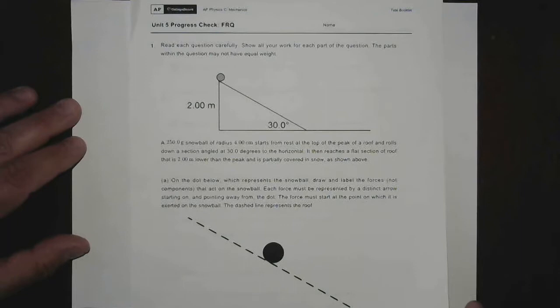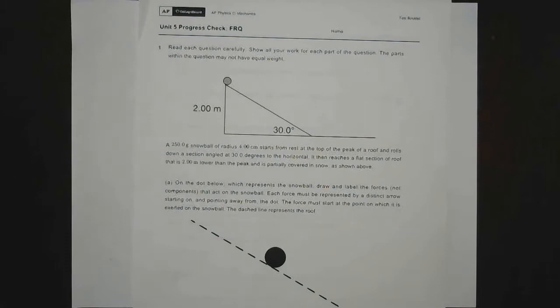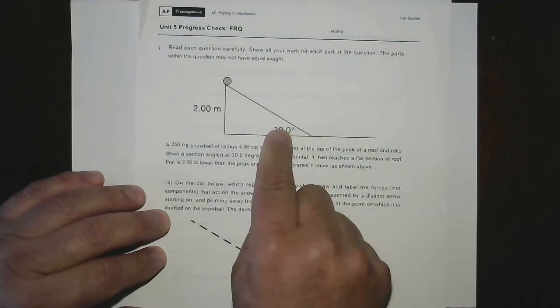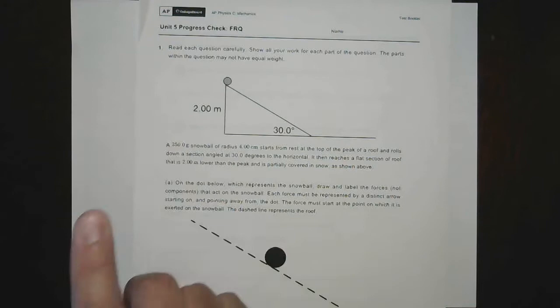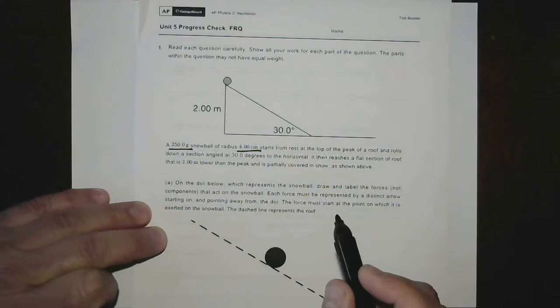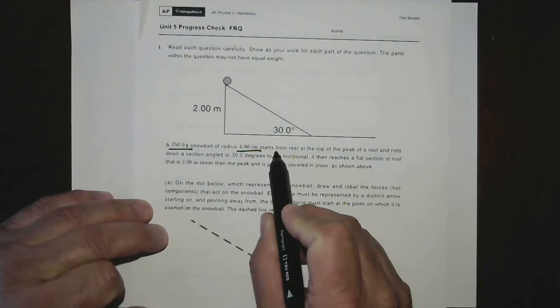Here we have a picture of what looks like an inclined plane and some sort of round object sitting at the top. They give you an angle and a side, so I guess we can figure out all the other sides if necessary. The text says a 250-gram snowball of radius four centimeters — grams and centimeters, I'm going to have to convert those. It starts from rest at the top of the peak of a roof and rolls down the section angled at 30 degrees to the horizontal.